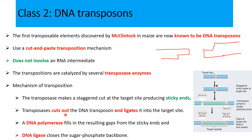The transposase cuts out the DNA transposon and ligates it to the target site. DNA polymerase then fills in the resulting gaps from the sticky ends. DNA ligase closes the sugar-phosphate backbone — because DNA polymerase can fill the gap but cannot join two different fragments, so DNA ligase finishes the job.